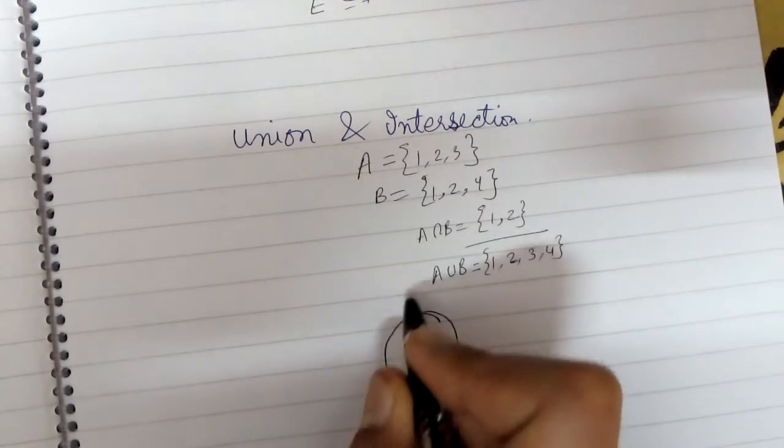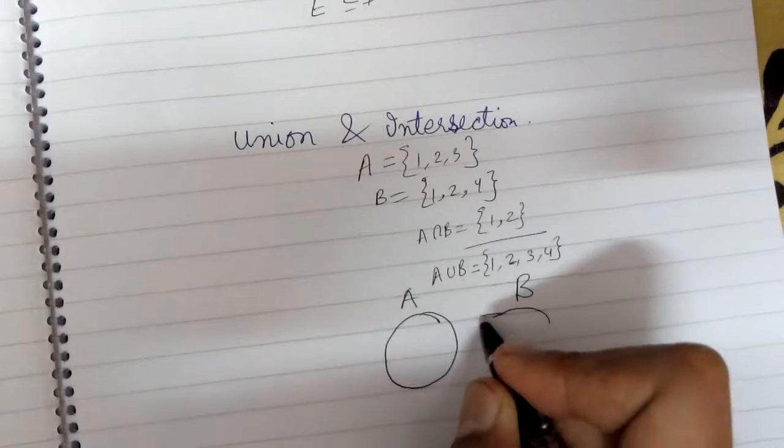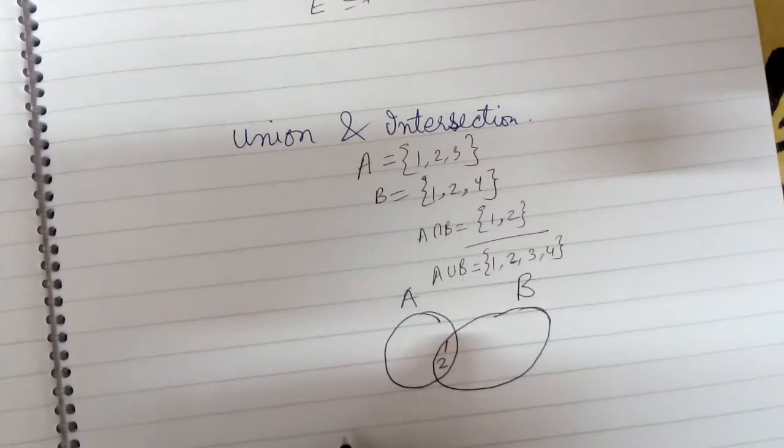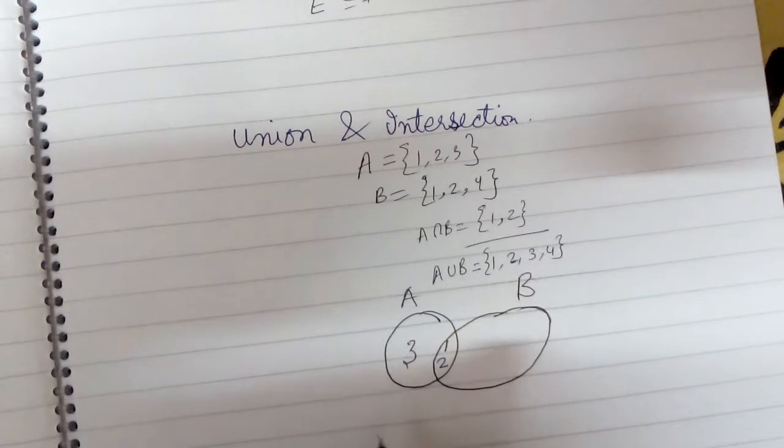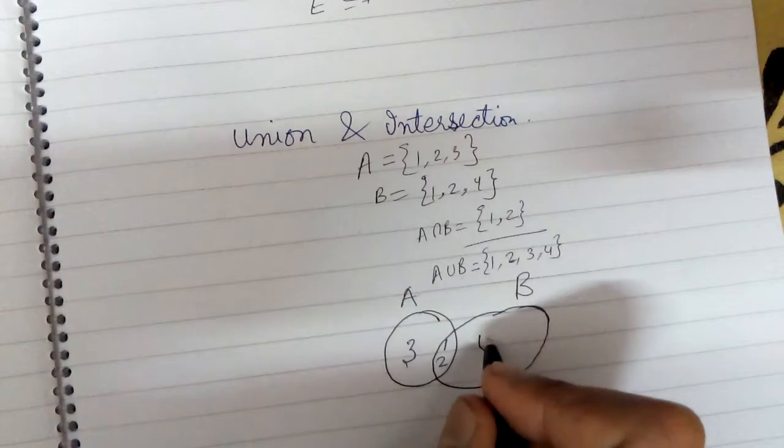Let's say this is set A, this is set B, so 1 and 2 are lying here, 3 is unique to A, 4 is unique to B.